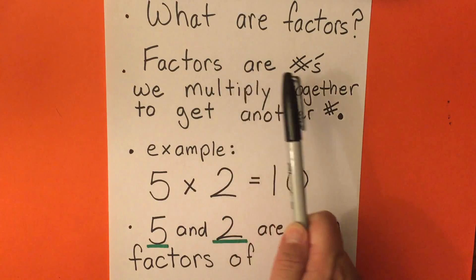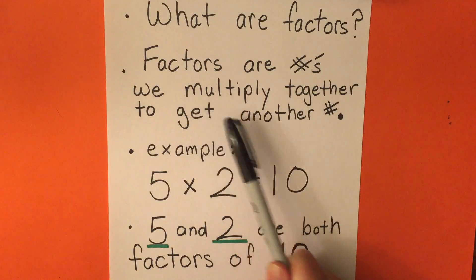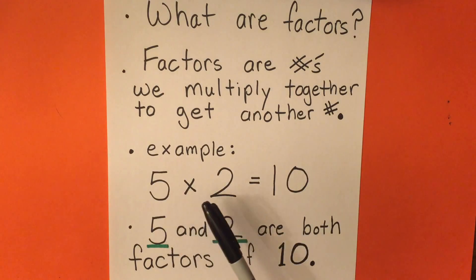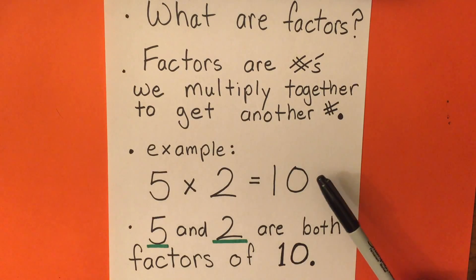First of all, what are factors? Well, factors are numbers that we can multiply together to get another number. For example, 5 times 2 equals 10. 5 and 2 are both factors of 10. 10, in this case, is what we would call a multiple of those two factors.